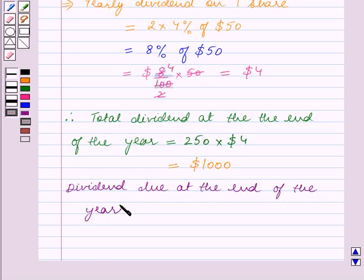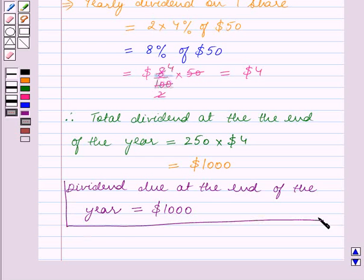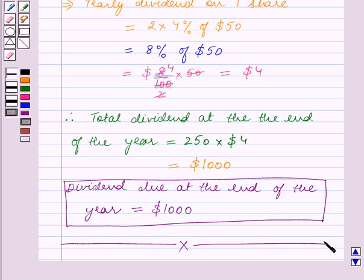Thus, the dividend due at the end of the year is $1000. With this, we end our session. Hope you enjoyed the session.